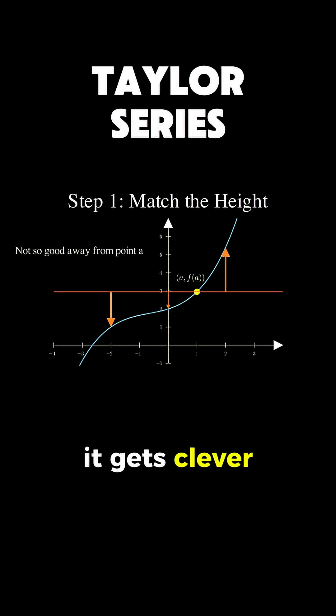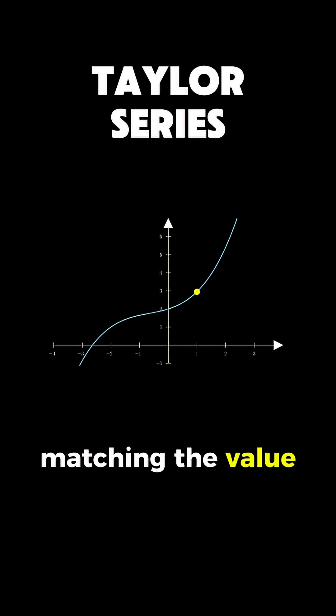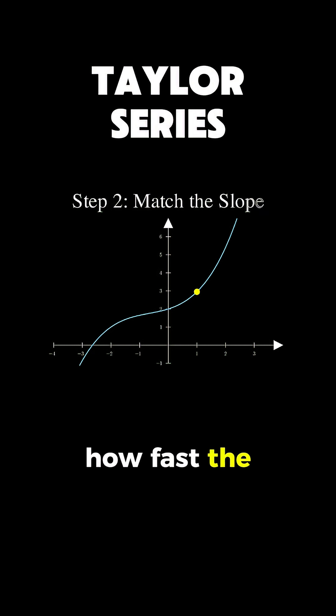So here's where it gets clever. Instead of just matching the value, let's also match how fast the function is changing at that point. In other words, let's match the derivative, the slope.